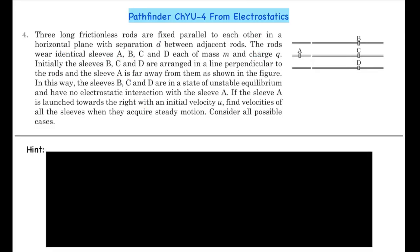Hello, here we have question number four from the Challenger Understanding Exercise of the chapter Electrostatics from Pathfinder. It's a tough question, so please give it a try before looking at the solution. The question: three long frictionless rods are fixed parallel to each other in a horizontal plane with separation d between adjacent rods. The rods carry identical sleeves A, B, C, and D, each of mass m and charge q. Initially the sleeves B, C, and D are arranged in a line perpendicular to the rods, and sleeve A is far away from them. The sleeves B, C, and D are in a state of unstable equilibrium and have no electrostatic interaction with sleeve A. If sleeve A is launched towards the right with initial velocity u, find the velocities of all the sleeves when they acquire steady state motion.